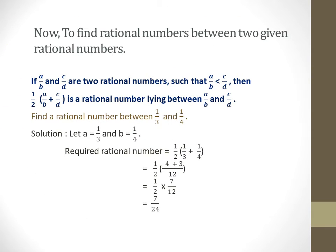Now, to find rational numbers between two given rational numbers: If a/b and c/d are two rational numbers, such that a/b < c/d, then 1/2(a/b + c/d) is a rational number lying between a/b and c/d.